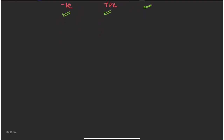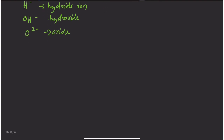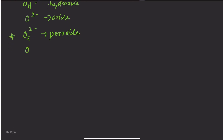H⁻ is hydride ion. OH⁻ is hydroxide. O²⁻ is oxide. O₂²⁻ is peroxide ion. O₂⁻ is superoxide ion. These are the common oxygen-based and hydrogen-based anionic ligands.